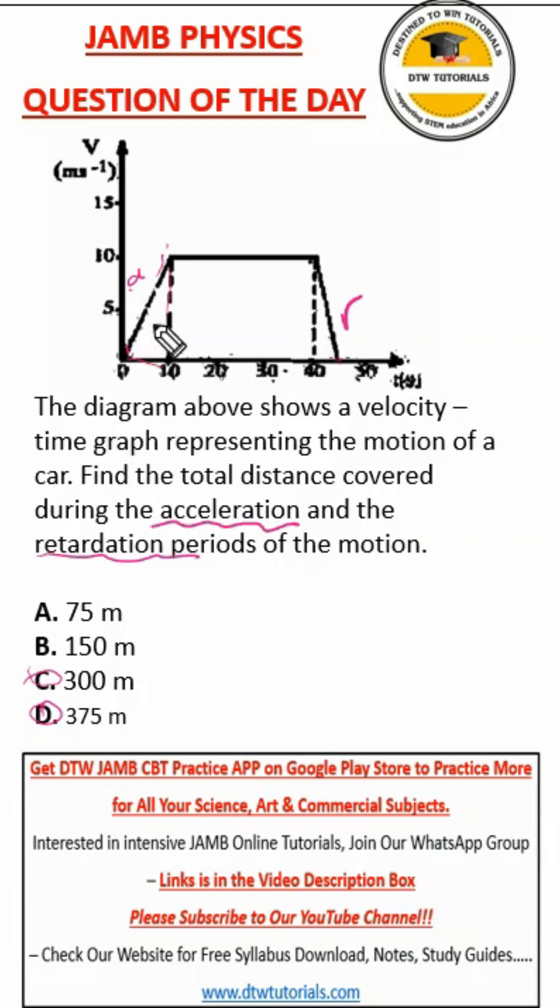So how do we do this now? Let us find the area of this triangle, which is half base times height. Remember, half base times height is the area of the triangle. Now, where is our base? Our base is from here to here. So from here, this is 0, this is 10. So our base is 10. And what is our height? Look at our height. This is 10. So our height is 10.